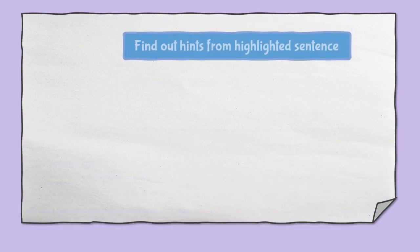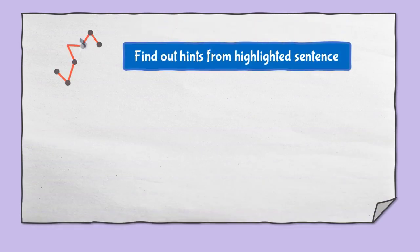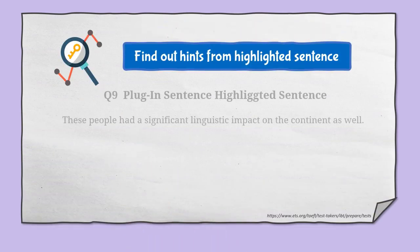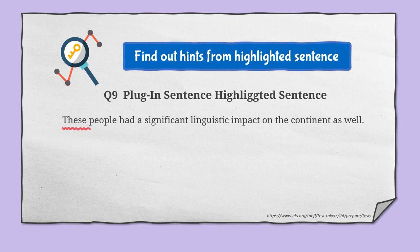The first step is to find out hints from the highlighted sentence. Let's see the example. 'These people' and 'linguistic impact as well' are keywords.